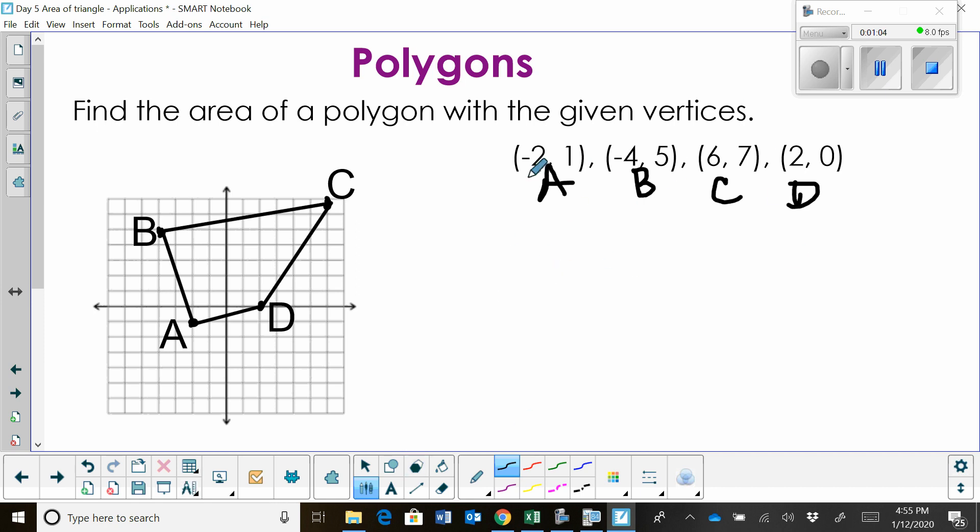What you're going to do is once you figure out the order, I'm going to go from A to B, B to C, C to D, and D back to A. I'm going to write a column of all those coordinates. So negative two, one, negative four, five, six, seven, and two, zero. So that's A, B, C, D.